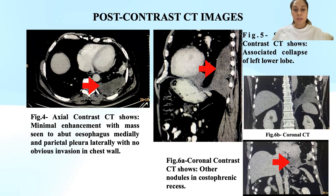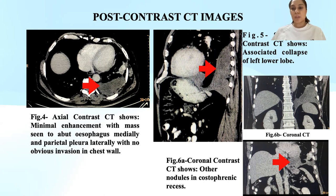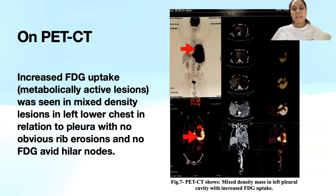The lesion was seen abutting the esophagus medially and parietal pleura laterally with no obvious invasion of the chest wall, and the fat planes with the esophagus were also maintained. There was associated collapse of the left lower lobe of lung, and a few nodules were also seen in costophrenic and cardiophrenic recesses. On PET-CT, the mass revealed increased FDG uptake.